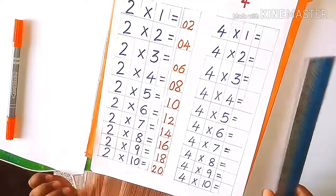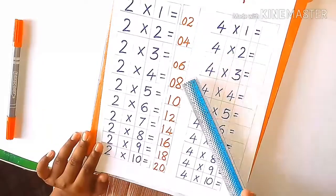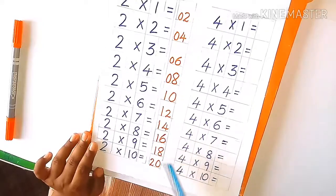So the method is you write 2 4 6 8 0 and again 2 4 6 8 0.